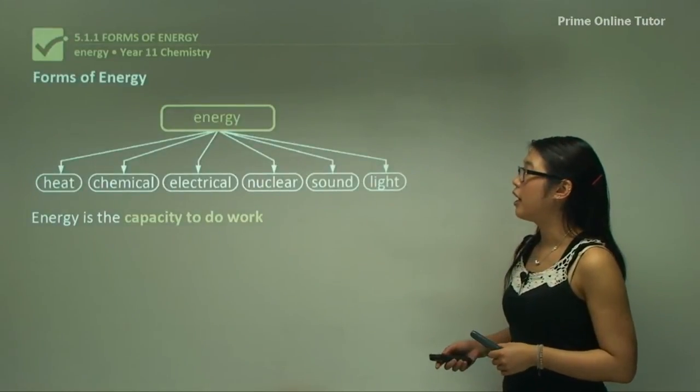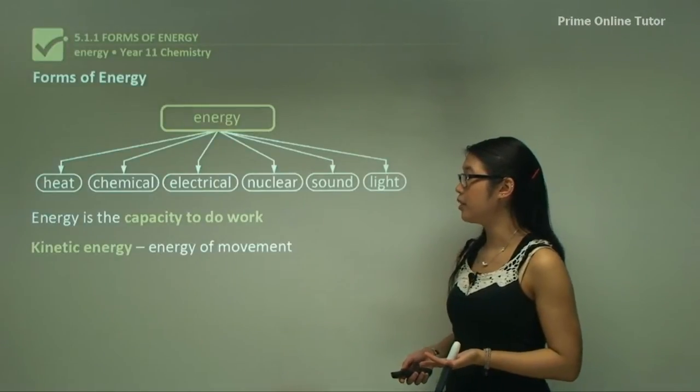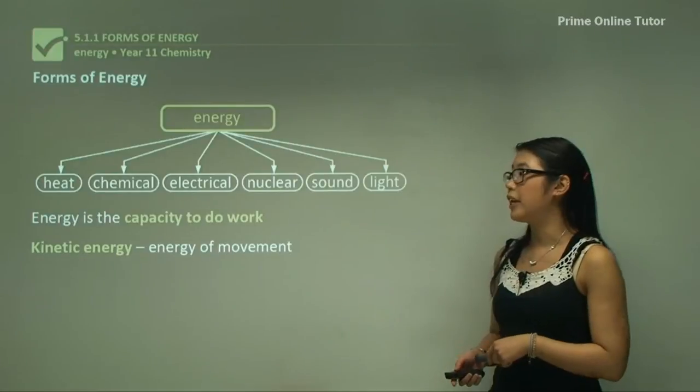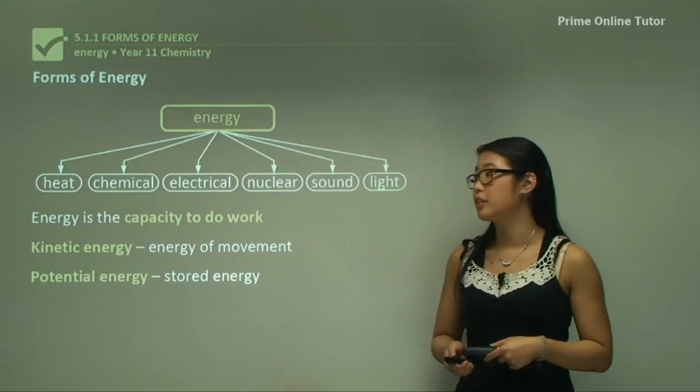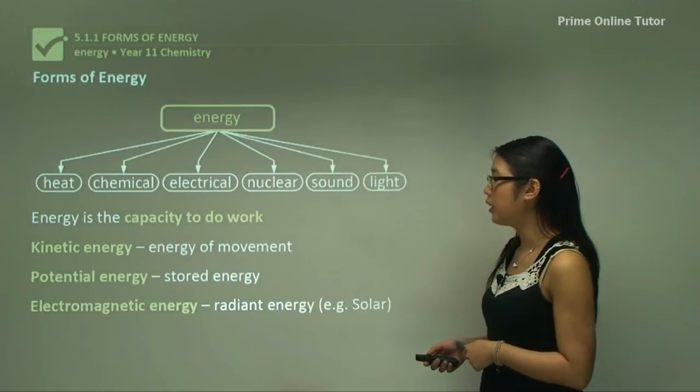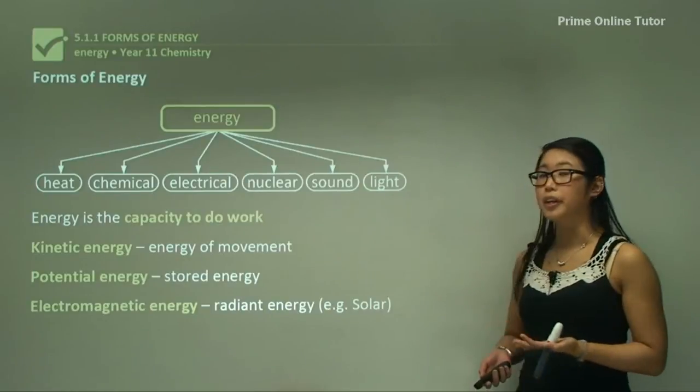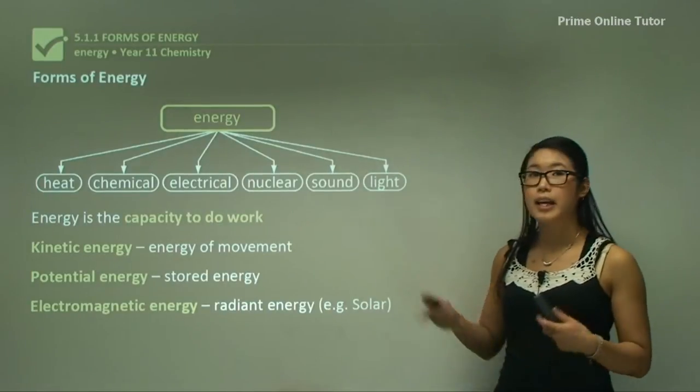So the forms of energy, firstly energy is the capacity to do work. So we can have different types of energy like kinetic energy which is the energy of movement, potential energy which is stored energy in chemicals and electromagnetic energy which is radiant energy such as solar energy. There's also other types of energy listed here like sound and light.